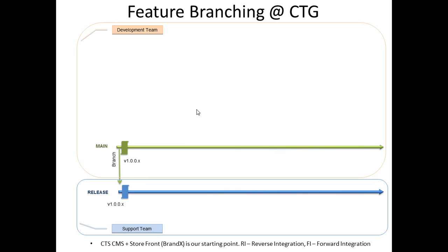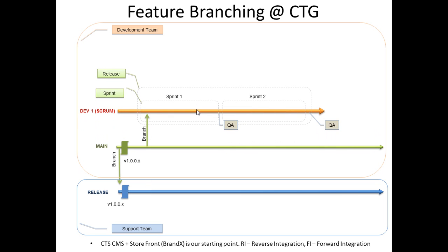Let's go ahead and create the first development branch. This branch is designed to support a release of the client's requested first set of features. It will also help our development team follow source development methodology based on Scrum. As you can see from this example, the first development team is tasked with delivering one major release with two sprints. Each sprint produces a potentially shippable product, which is then deployed to the QA environment after each sprint has been completed.